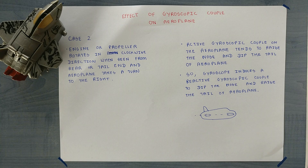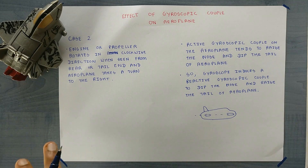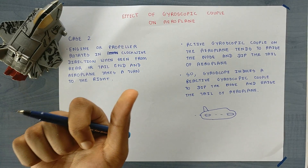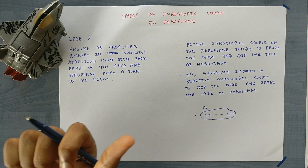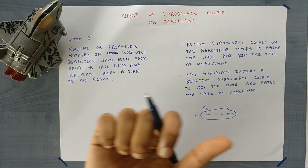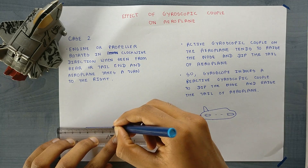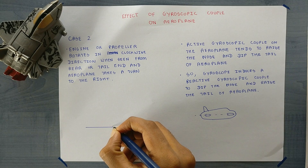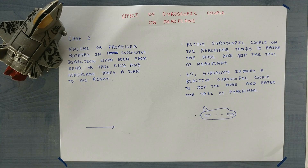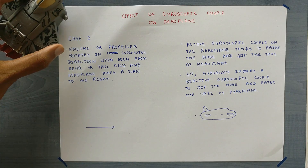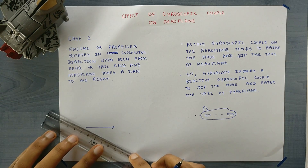In the second case, the engine or propeller rotates in clockwise direction when seen from the rear end. That is, if you are viewing from this end, the engine is rotating in clockwise direction. According to the right hand thumb rule, it will cause the plane to move in this direction, so the velocity vector will be like this. And the aeroplane takes a turn to the right, so the velocity vector will be in this direction.